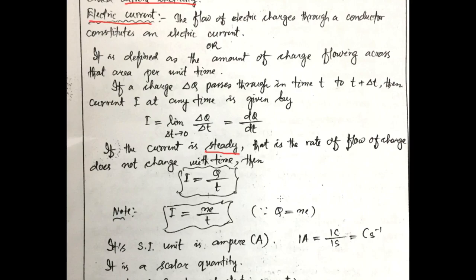But according to quantization of charges, this Q can be written as Q is equal to NE, where N is the number of electrons and E is the electronic charge. After substituting this Q in this equation, I becomes I equal to NE upon T.